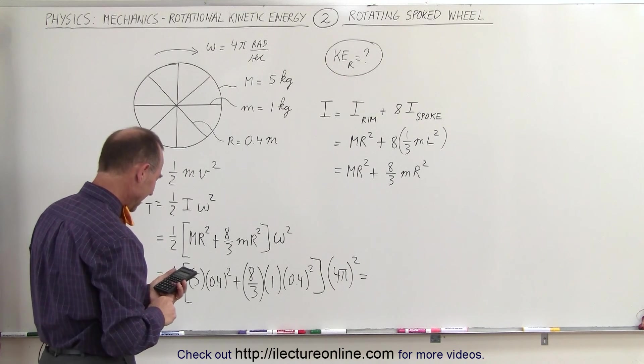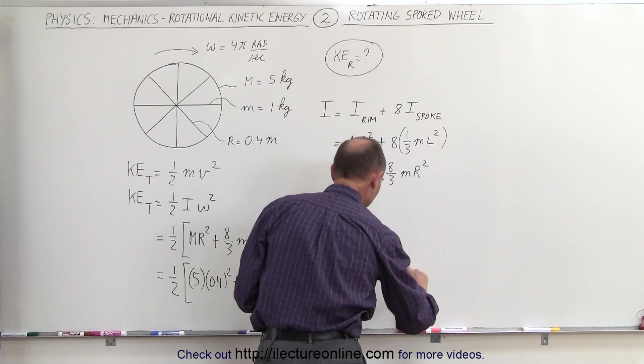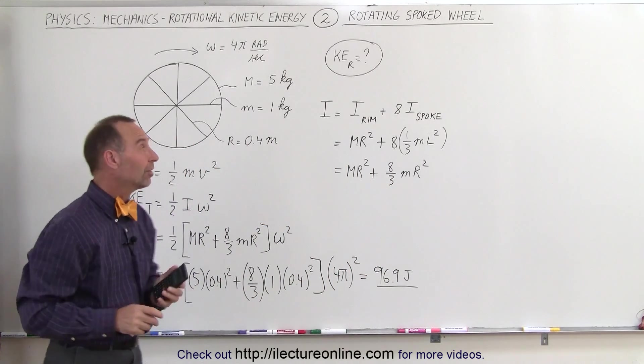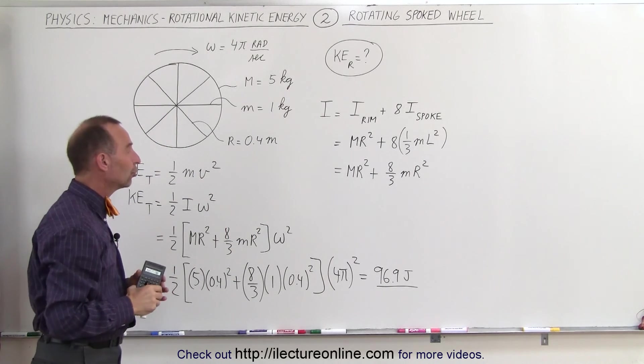96.9, and units would be joules, newton meters, which is joules, which means in this case the rotational kinetic energy of a spoked wheel is equal to 96.9 joules.